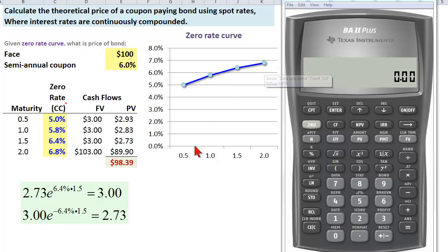In particular you can see it's an upward sloping zero or spot rate curve such that at the six month maturity the zero rate - we could also call it the spot rate - is five percent; at one year maturity the zero or spot rate is five point eight percent and so on in increasing fashion.